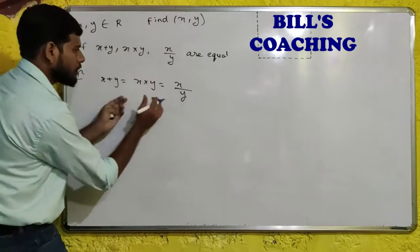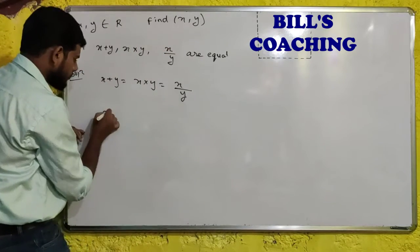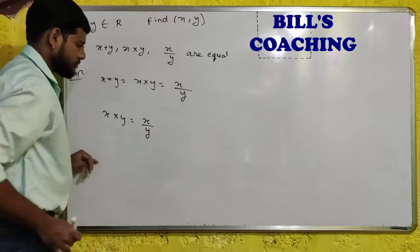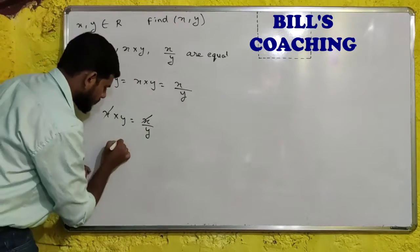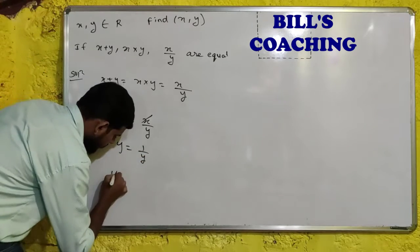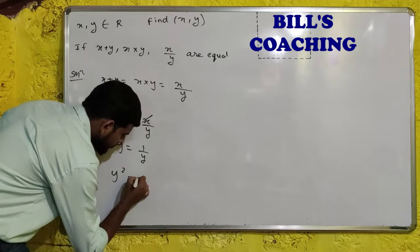Now, we will check the first equation over here. We will write x into y is equal to y upon x. This will get cancelled. Y will remain 1 upon y. So solve this. This will become y squared is equal to plus 1.